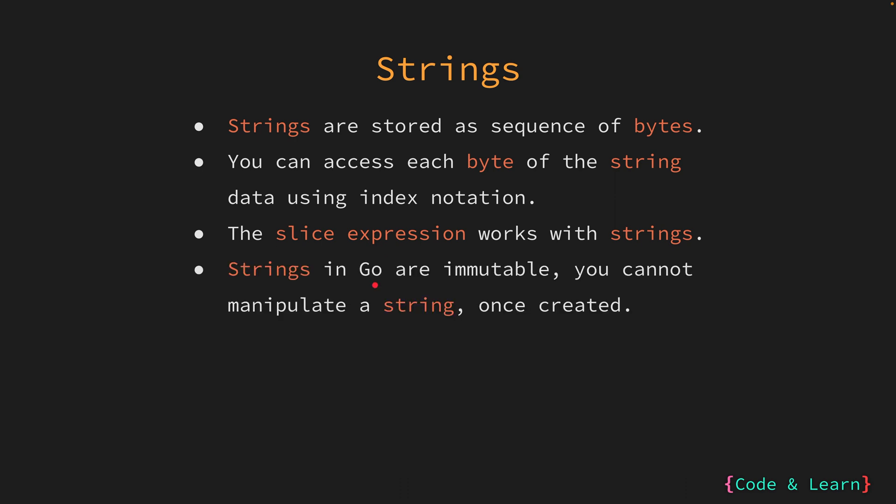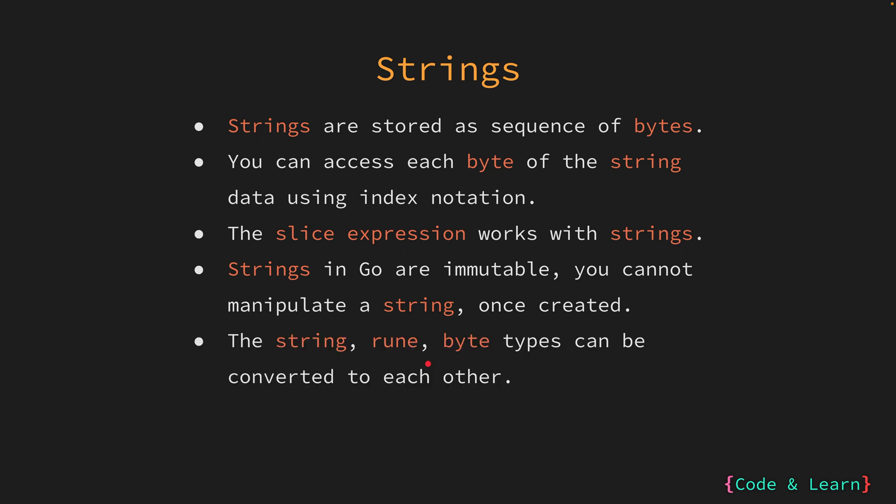In Go, strings are immutable, which means once a string is created, you cannot change its contents. If you want to modify a string, you will need to create a new string with the desired changes.